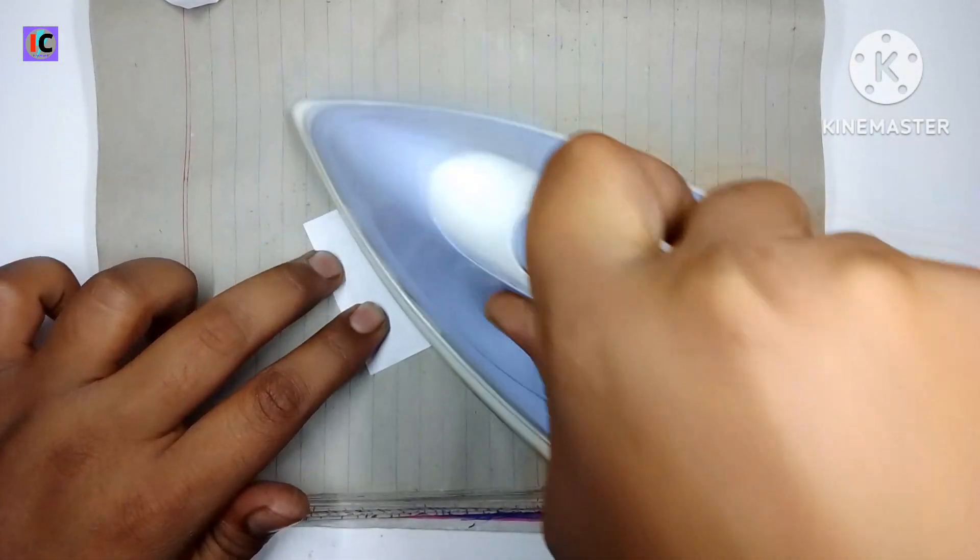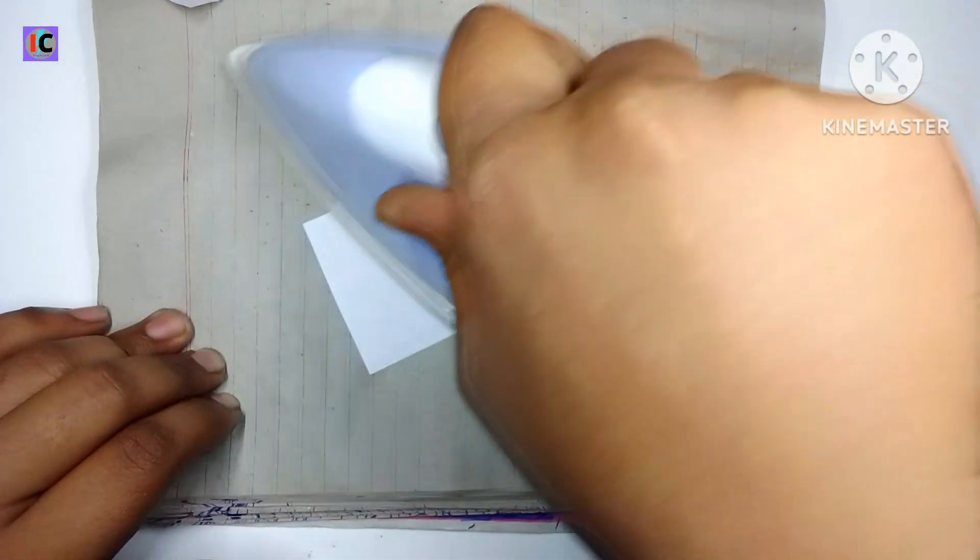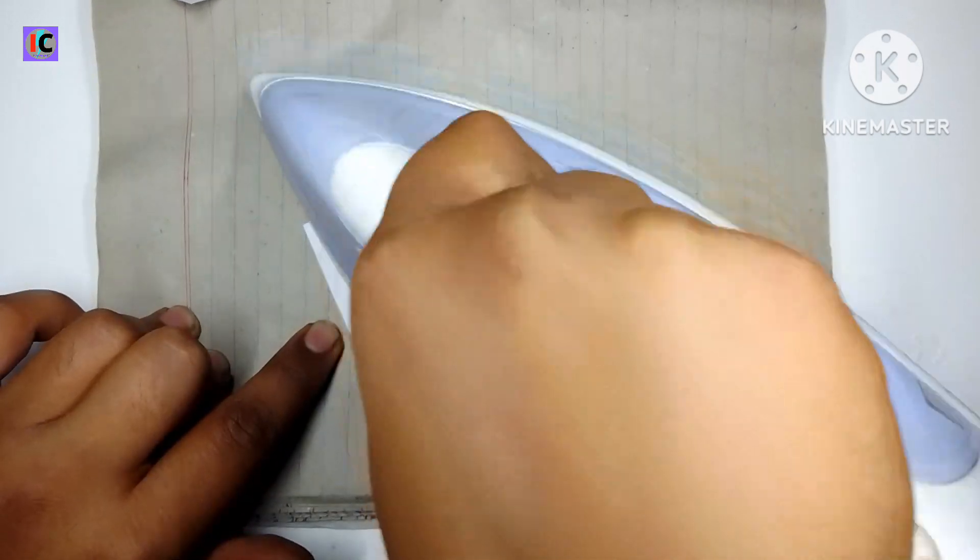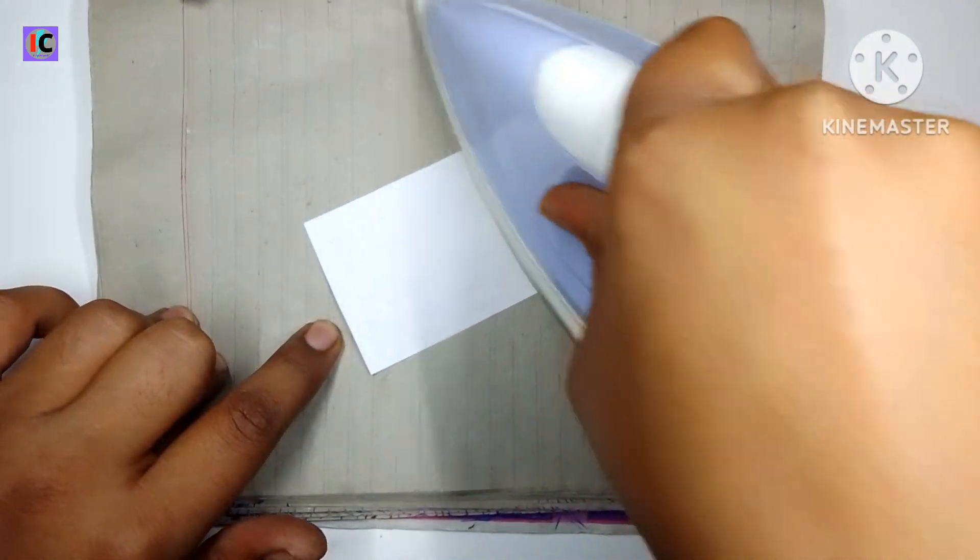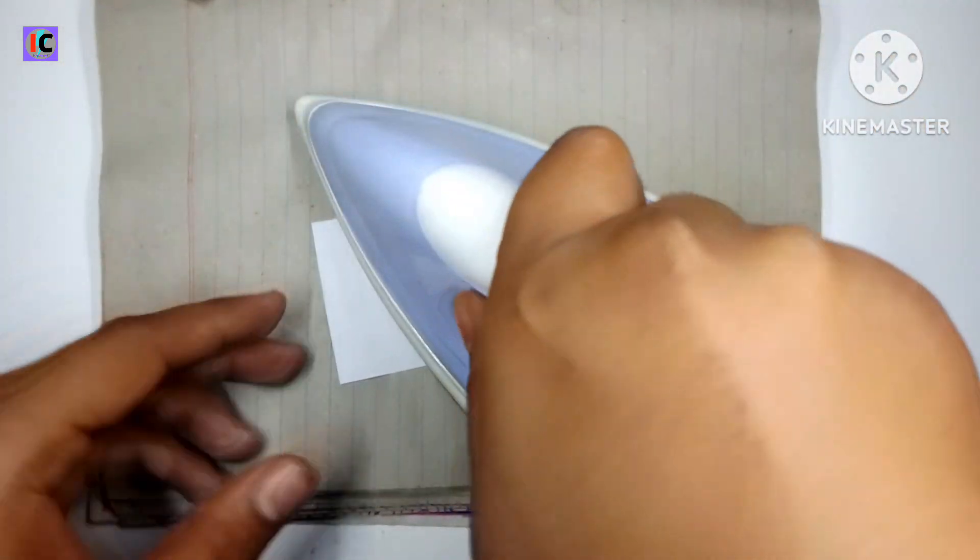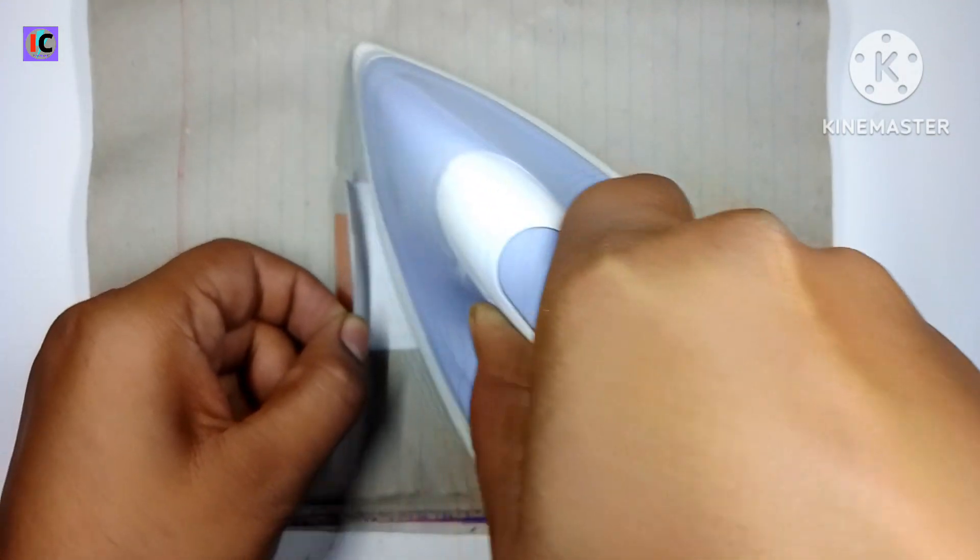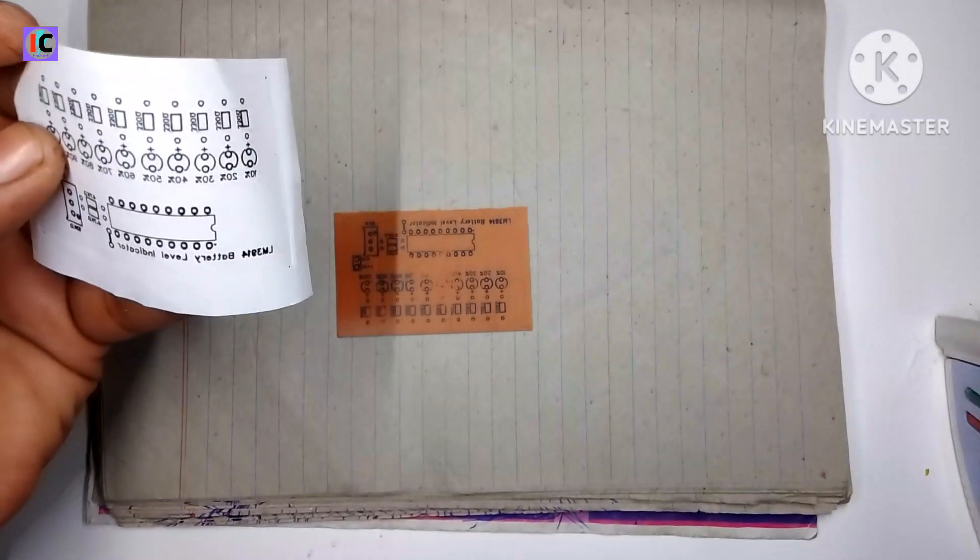Now again I am using iron for almost 10 to 15 seconds. Here you can see, properly hard press it and it will work properly. Now remove the paper from the PCB like I did.